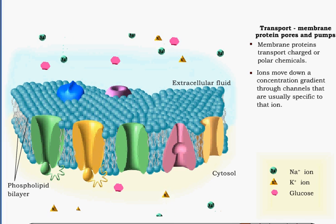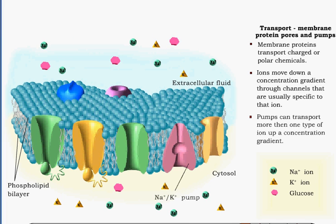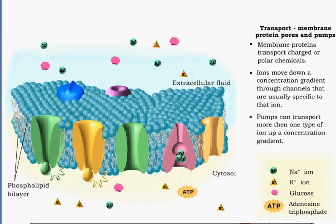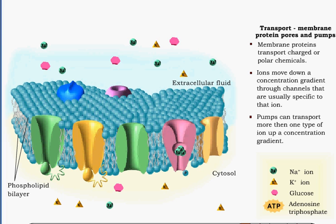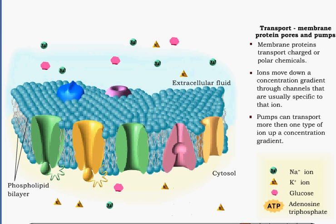Another form, pumps, moves ions against their concentration gradient, using additional energy supplied by the hydrolysis of ATP. Channels usually transport only specific types of ions, while pumps can transport more than one type.